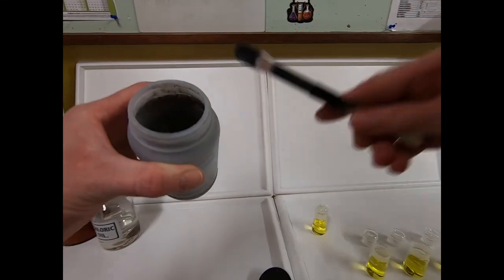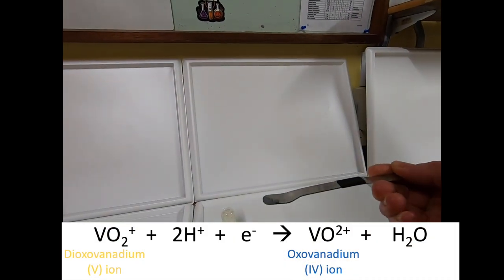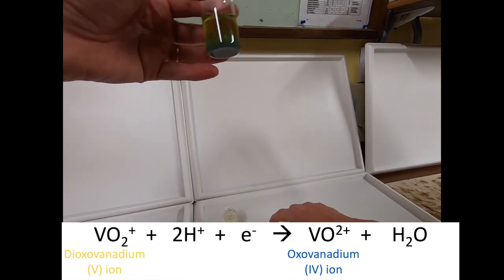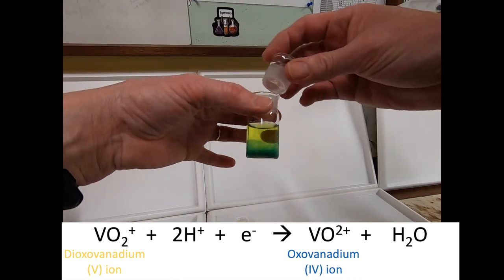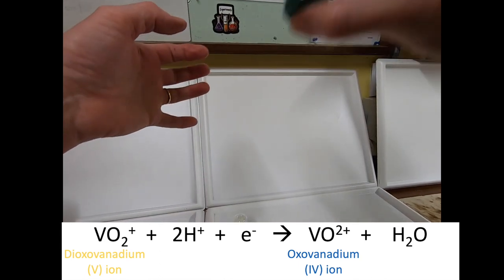We start off this reaction with a yellow solution which contains the dioxo vanadium(V) ions. When we add a small amount of zinc, this causes a reduction in the oxidation number of vanadium from +5 to +4. You'll see the solution change from yellow to blue as this reaction occurs.